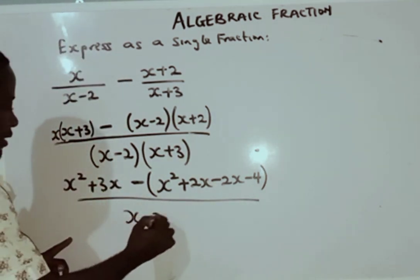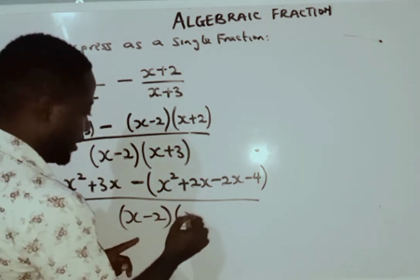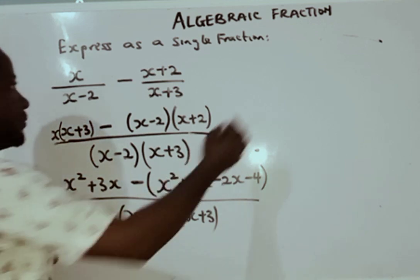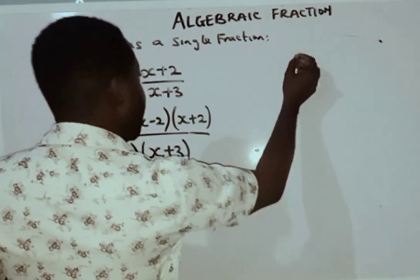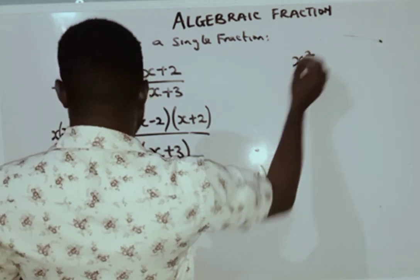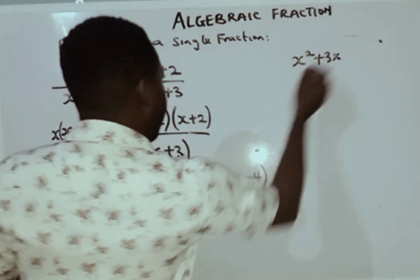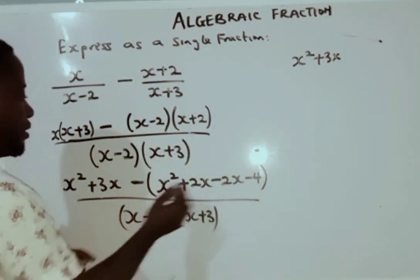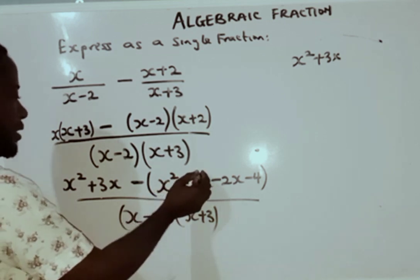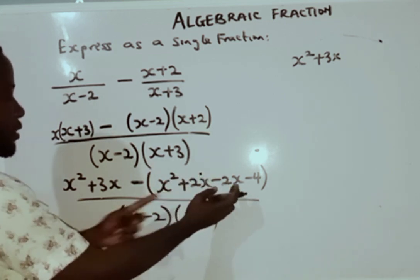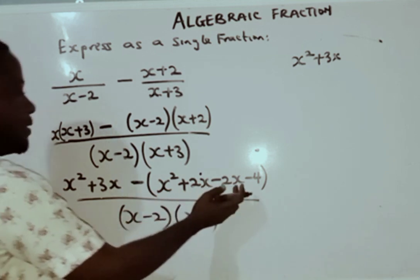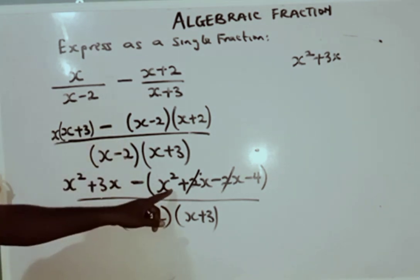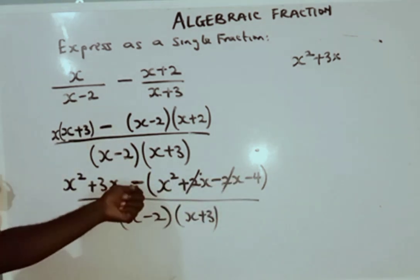The denominator is x(x minus 2)(x plus 3). Before rearranging, I expand the first numerator to get x squared plus 3x. You can see that plus 2x and minus 2x cancel each other out, giving zero. So in the brackets I am left with x squared minus 4.